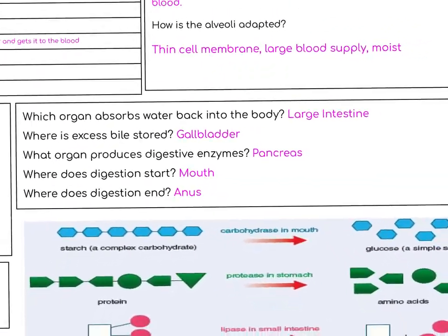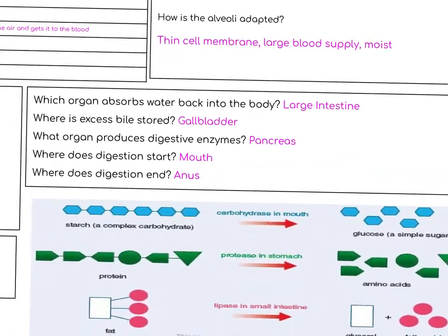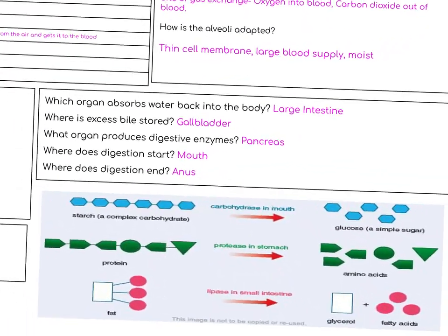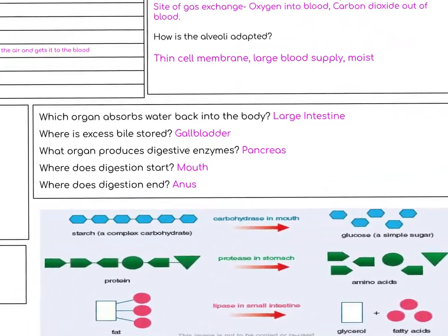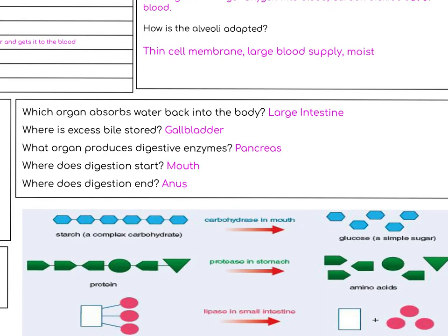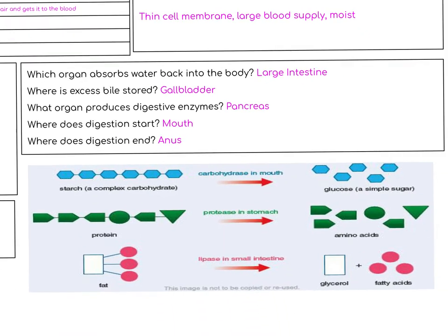Which organ absorbs water back into the body? The large intestine. Where is excess bile stored? The gallbladder. What organ produces digestive enzymes? The pancreas. Where does digestion start? The mouth. Where does digestion end? The anus.